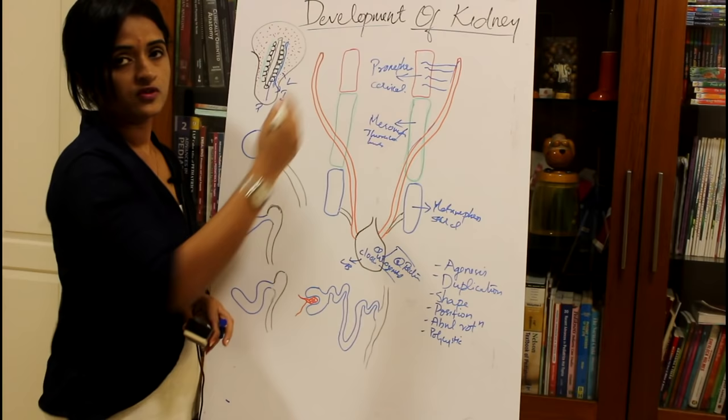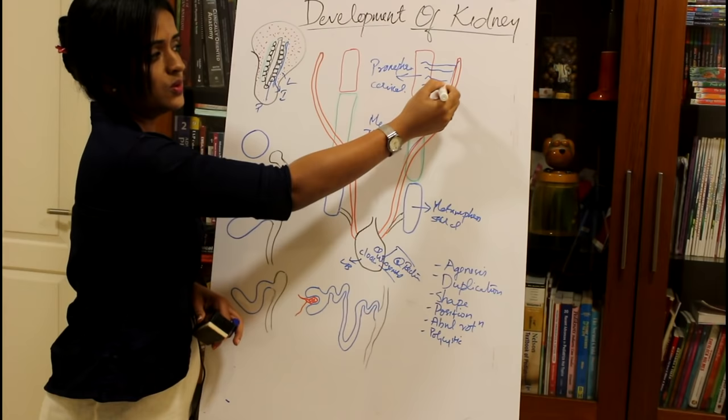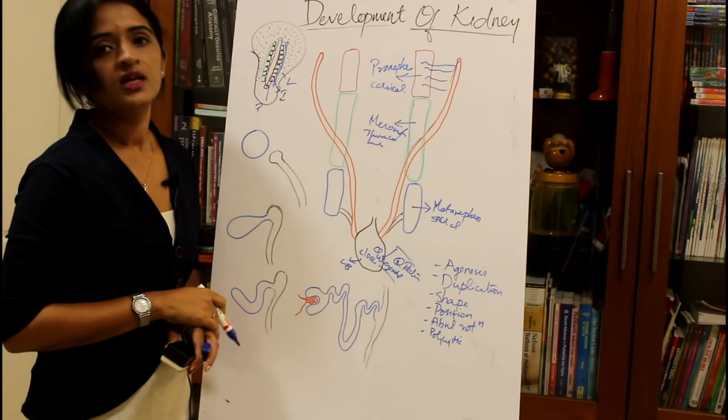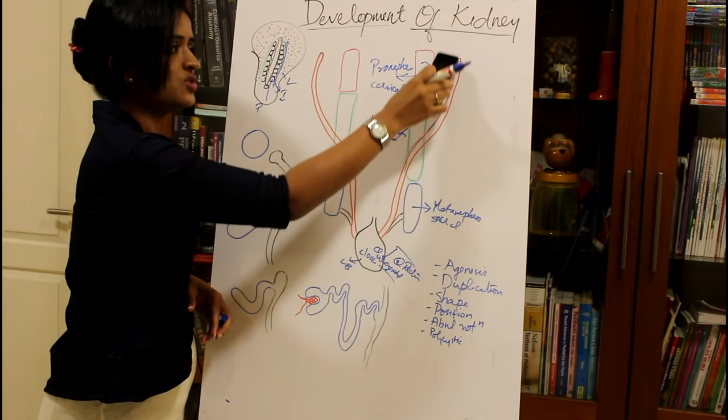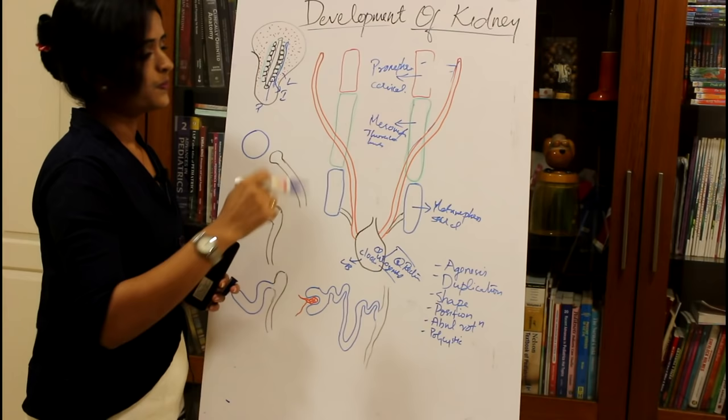As the pronephros develops during early stages, it has many ductules and a duct. The duct of the pronephros opens into the urogenital sinus or the primitive urinary bladder. It is non-functional in human beings, so as soon as it is formed it degenerates. The ductules degenerate but the duct persists.